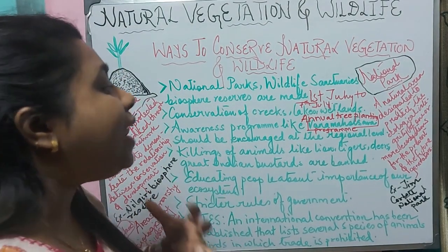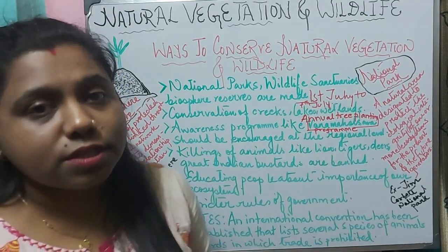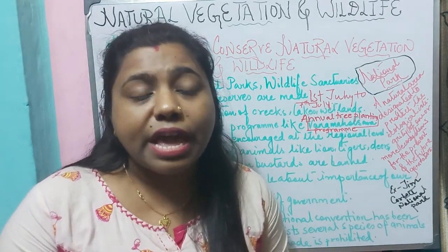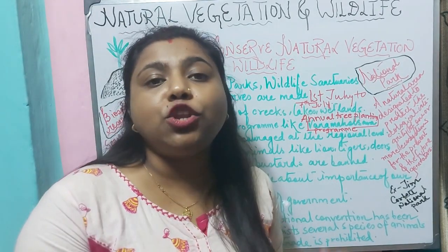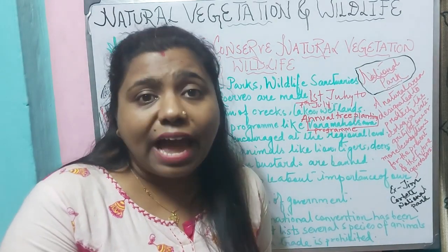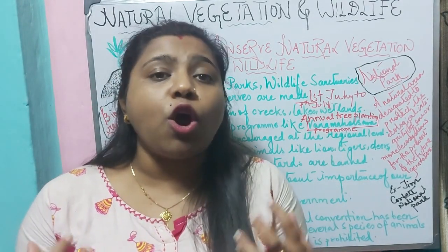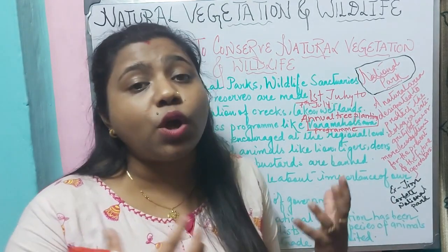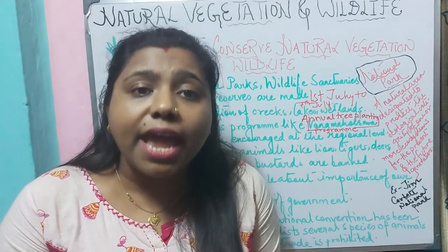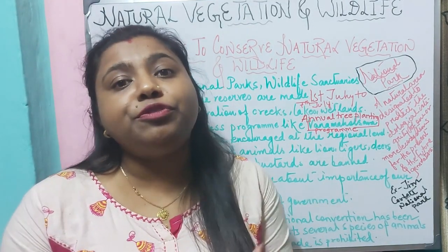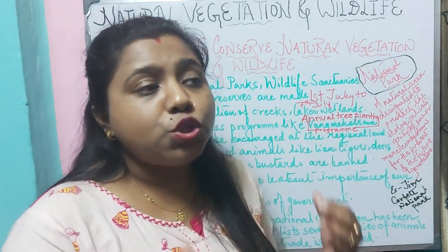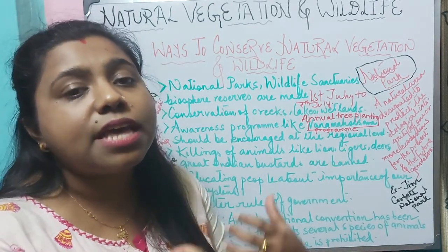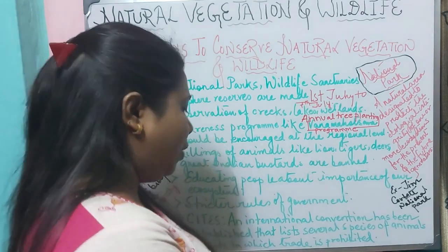The next way is by educating people. People should be educated and encouraged about the importance of the ecosystem. School children should be encouraged to watch birds, taken to nature camps and botanical gardens so they can understand the diversity of plant and animal life in our country and appreciate the varied habitats of different species. It is very important to encourage people and make them realize their duty towards protecting plant and animal life.